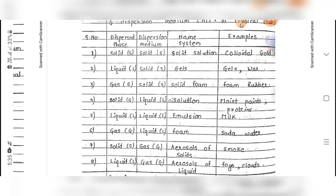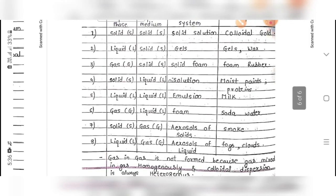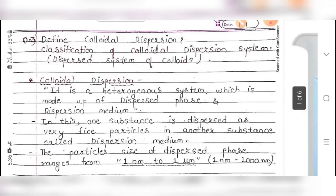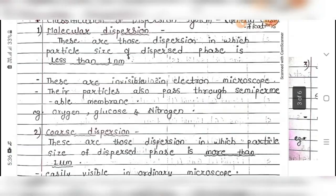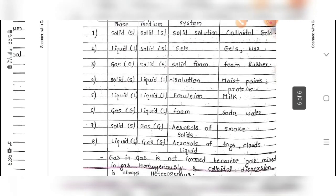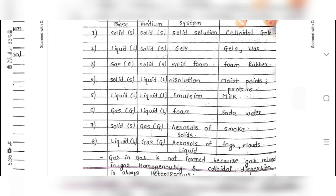Eight terms are mentioned, but the ninth combination — gas dispersed in gas — is not possible. This is because gas mixes with gas homogeneously, and the criteria for colloidal dispersion requires a heterogeneous system, as discussed in the definition. Since gas and gas is homogeneous, it is not a valid colloidal system.